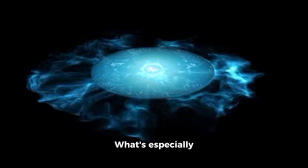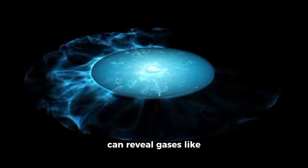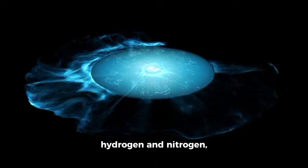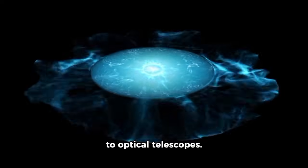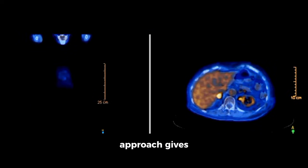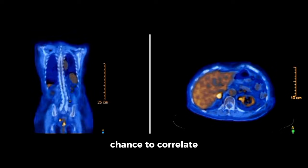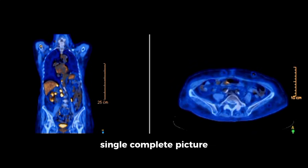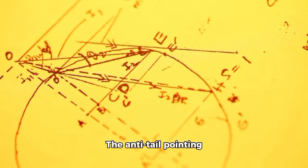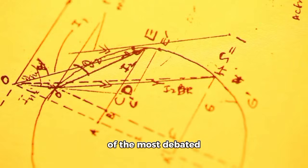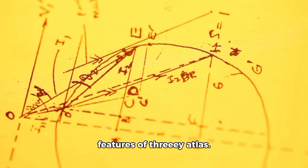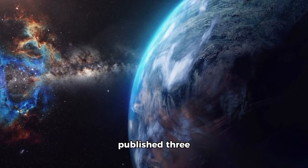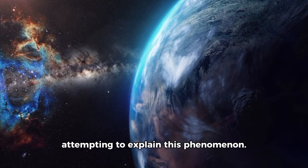This X-ray emission results from interactions between the comet's gases and the solar wind. What's especially interesting is that X-rays can reveal gases like hydrogen and nitrogen, which are nearly invisible to optical telescopes. The timing of closest approach gives researchers their best chance to correlate X-ray, optical, and infrared data into a single complete picture of the comet's composition. The anti-tail pointing toward the sun remains one of the most debated features of 3I Atlas. Dr. Liu has now published three scientific papers attempting to explain this phenomenon.